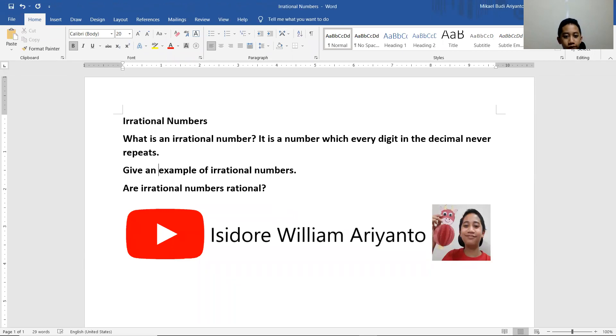Give an example of irrational numbers. The easiest example would be pi, which is 3.14... I do not remember all the digits because it's infinite. It is infinite, like millions. So just type dot dot dot.